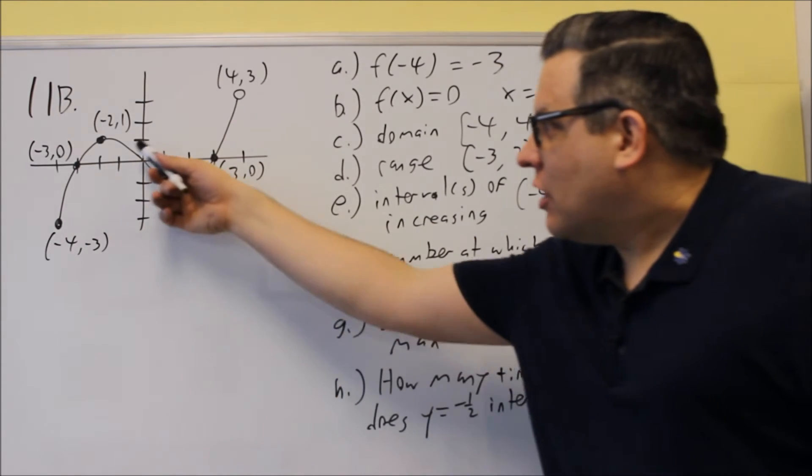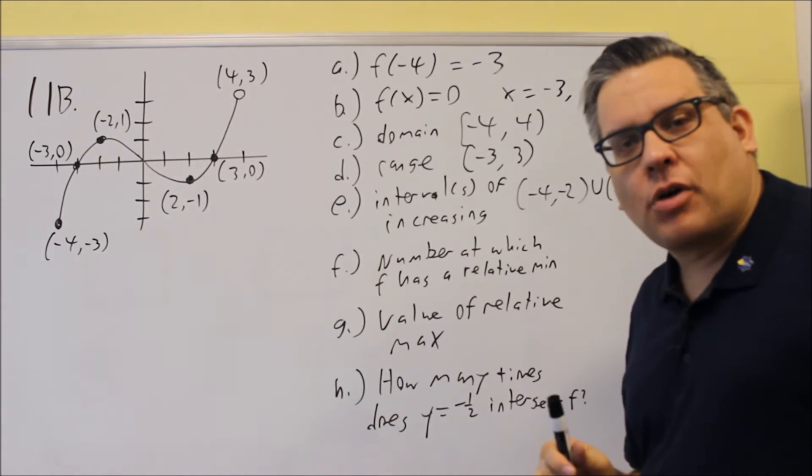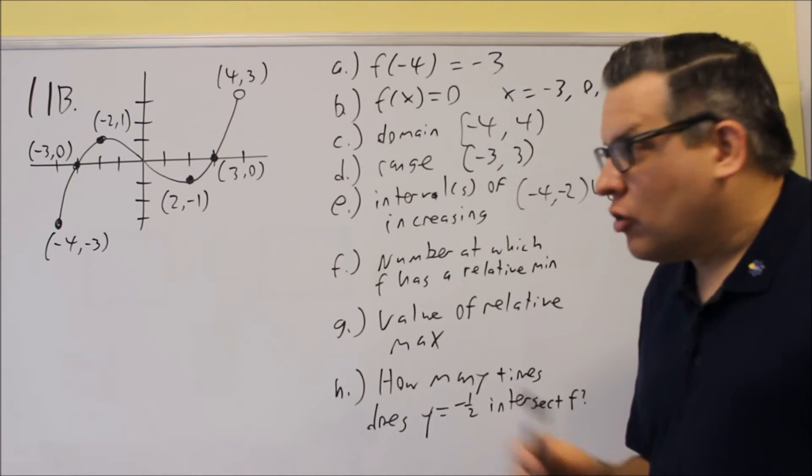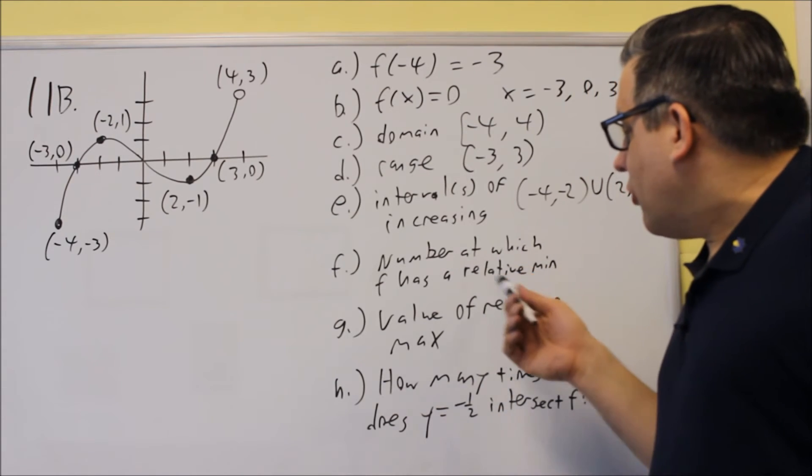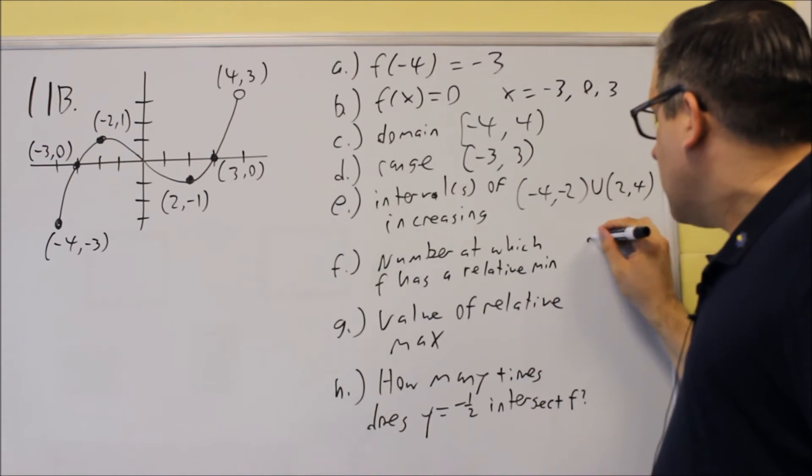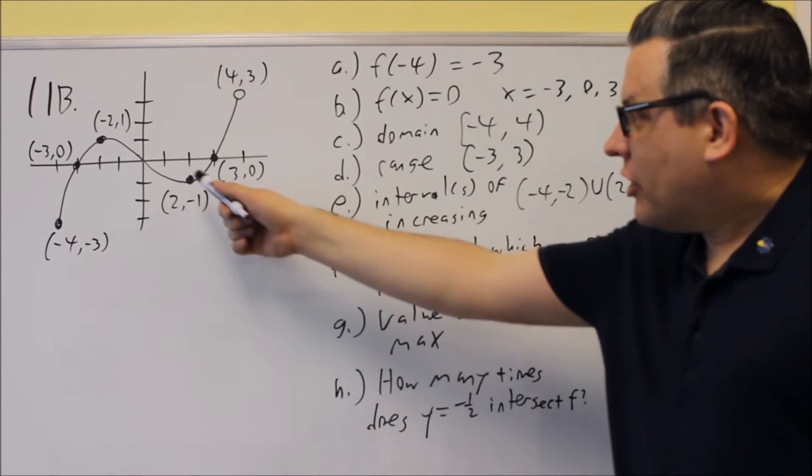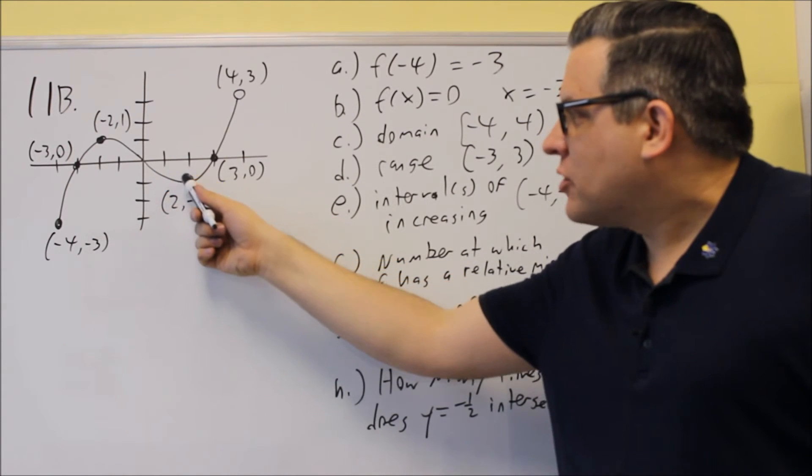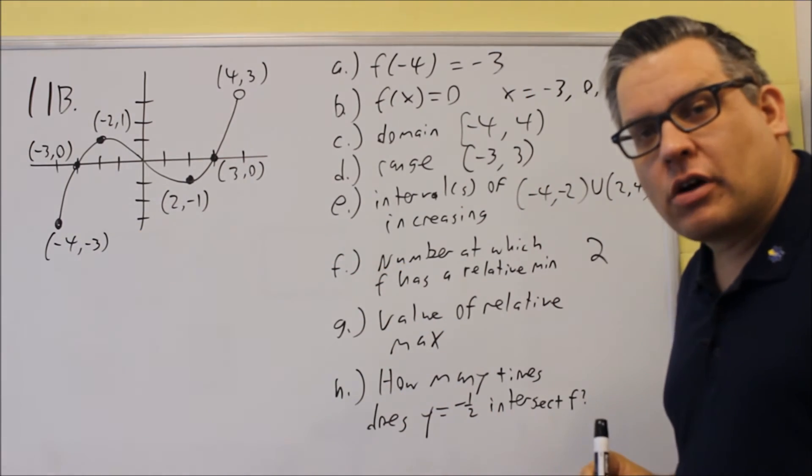It means that you have a decreasing part and an increasing part somewhere. It doesn't have to be necessarily the highest point or lowest point on the graph. So for this relative min, we're going to use 2. So at that place here, that's the x value at which the graph drops and then it increases again. I'm not going to use the end point there.